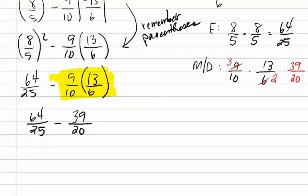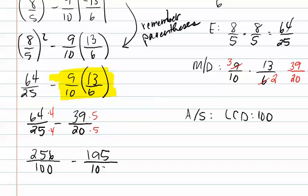We now continue on with the problem. Remember, we must get an LCD when adding or subtracting fractions. The least common denominator between twenty-five and twenty is one hundred. This means that we multiply the twenty-five times four, and the twenty times five. This will give us two hundred and fifty-six over one hundred, minus one hundred and ninety-five over one hundred. When we subtract, we get sixty-one over one hundred. This does not reduce, therefore, it is our final answer.